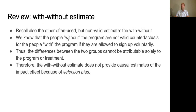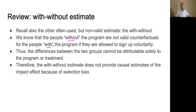Now the with-without estimate — remember that one, where we compare the people without the program to the people with the program. That's a good idea, right? Wrong. The people without the program are not valid counterfactuals for the people with the program because for most of these programs, groups sign up voluntarily. The people who signed up are systematically different — maybe higher quality, better informed, or know how to access resources. The differences between the two groups cannot be attributable solely to the program. This is called selection bias.